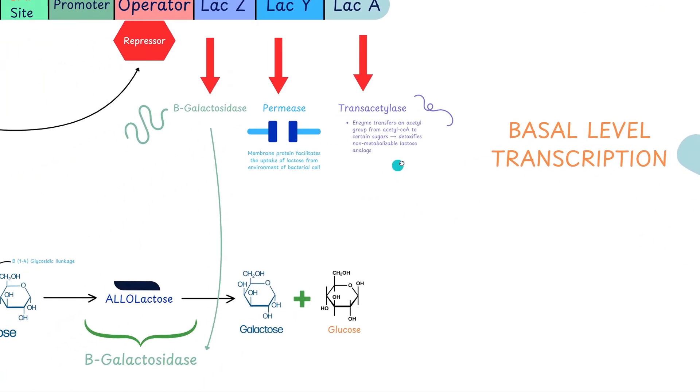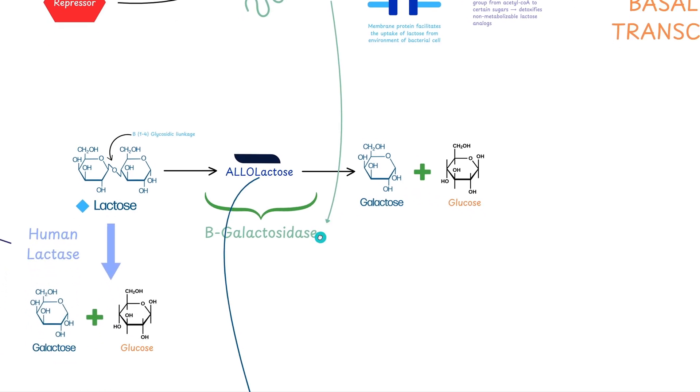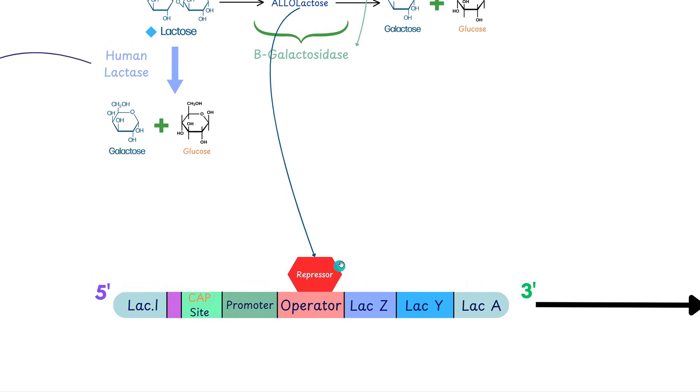Once lactose enters the cell, as we see here via the permease, lactose is then broken down by beta-galactosidase into that allolactose intermediate. So we break that beta-1,4 glycosidic linkage that links the dimer disaccharide of the glucose and galactose, and this allolactose is then going to be broken down into galactose and glucose. So the cool thing actually about allolactose is that right here we have the repressor just normally repressing or binding to the operator region.